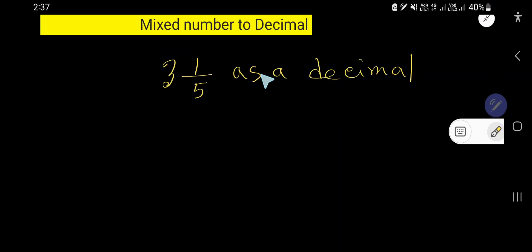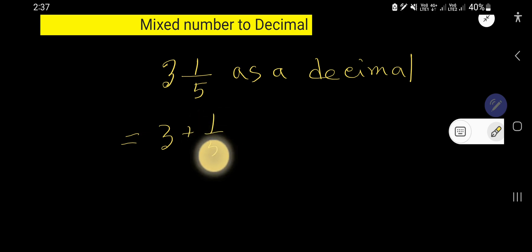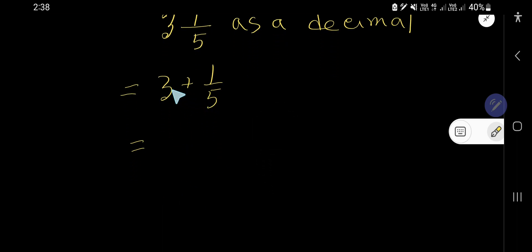How to convert a mixed number to decimal. Three and one-fifth as a decimal — this is a mixed number. To convert it, rewrite it as three plus one over five. Three is the whole number part and one over five is the fractional part.